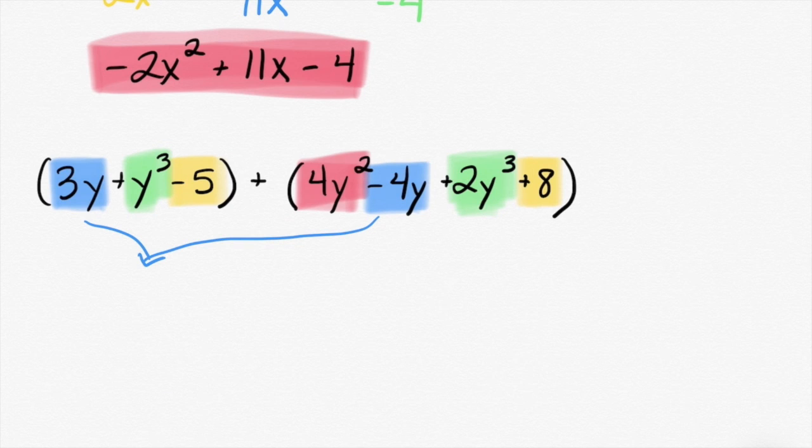We're getting to that, the order. Negative y or negative 1y if you're nasty. y cubed and 2y cubed. Very good. minus 5 plus 8. Very good. Positive 3.